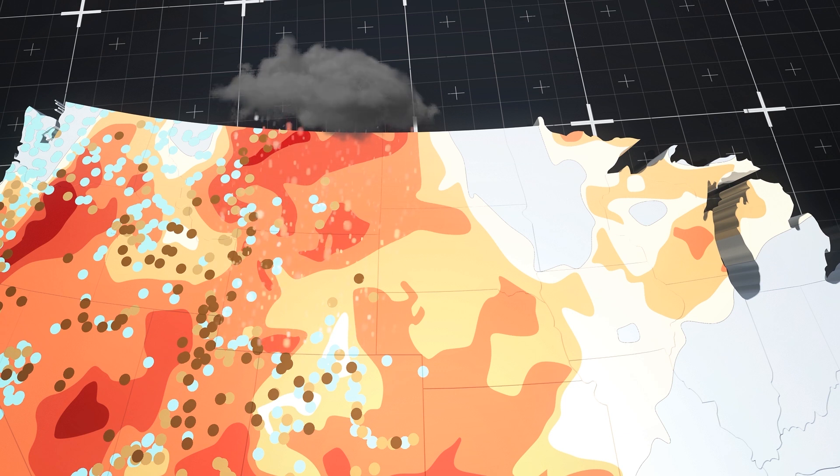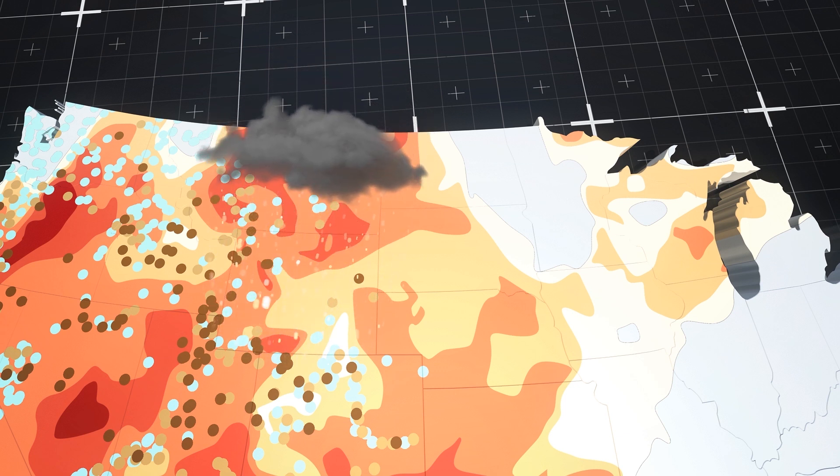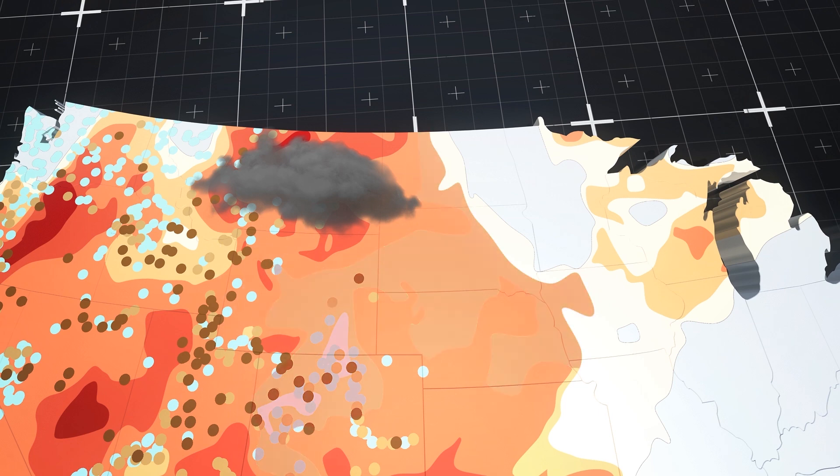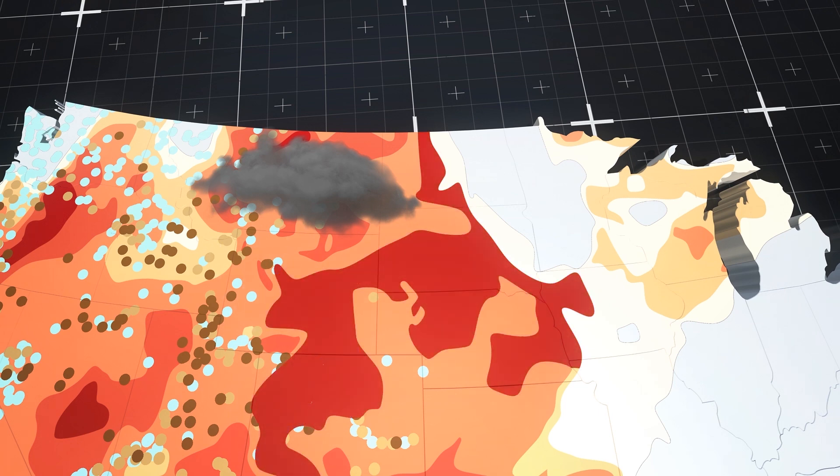UCLA climate scientist Daniel Swain told CNN it may be, at least on a regional basis, a zero-sum game where if water falls out of the cloud in one spot, it's even drier by the time it makes it downwind.